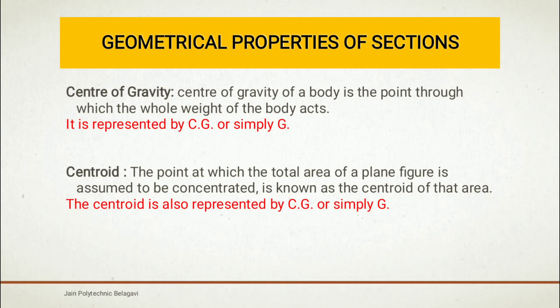The center of gravity of a body is the point through which the whole weight of the body acts. It is a geometric property of an object and represents the average location of the weight. Imagine you have an empty carry bag and you drop a stone into it — the stone will rest exactly at the center of the base of the bag, sliding down to the centroidal position due to its own weight. That resting position is the center of gravity of the object.